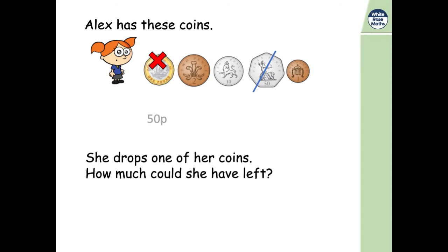Okay. If she is dropping one of her coins, she might have dropped the pound. So let's add up the others. So she could have 63 pence left if she dropped one of her coins.